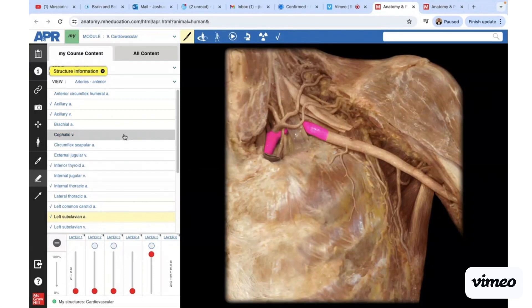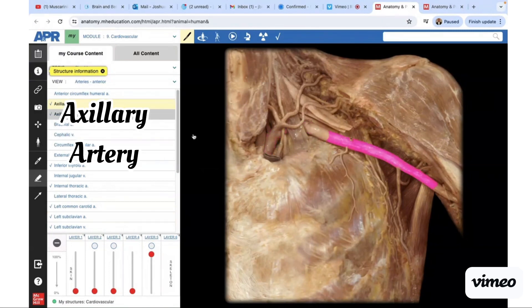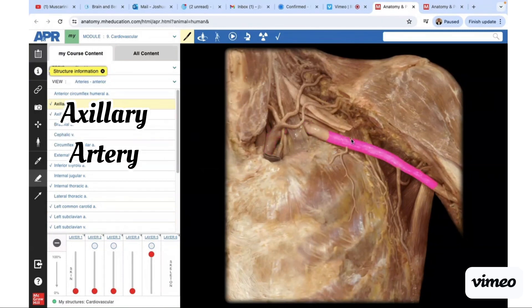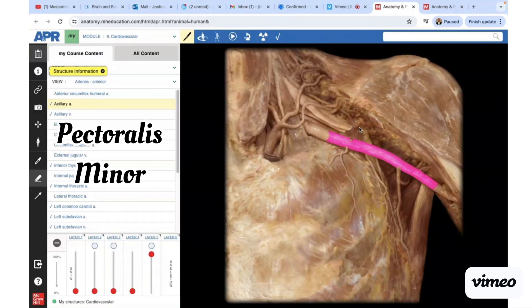If we follow that left subclavian artery out, it'll turn into the axillary artery. Here's the thoracoacromial artery coming off the axillary artery. It's going to provide blood supply to the overlying pectoralis minor that's been removed so we can see this vessel well. Once you get past the axilla, the axillary artery is now going to become the brachial artery.